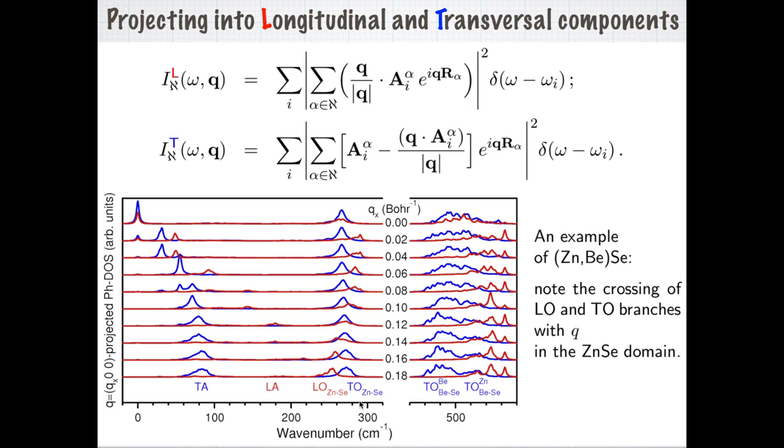Moreover, one can organize the distinction between the longitudinal and transversal components of vibration for the given direction of the Q-vector. In this case, it just needs to make a projection of the given eigenvector component onto the direction of the Q-vector and isolate the perpendicular projection. In this case, we will have a separation between the longitudinal and transversal modes.